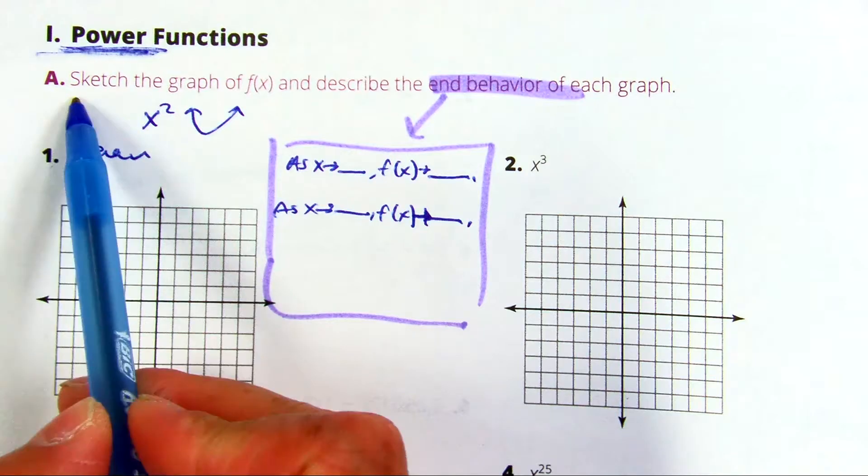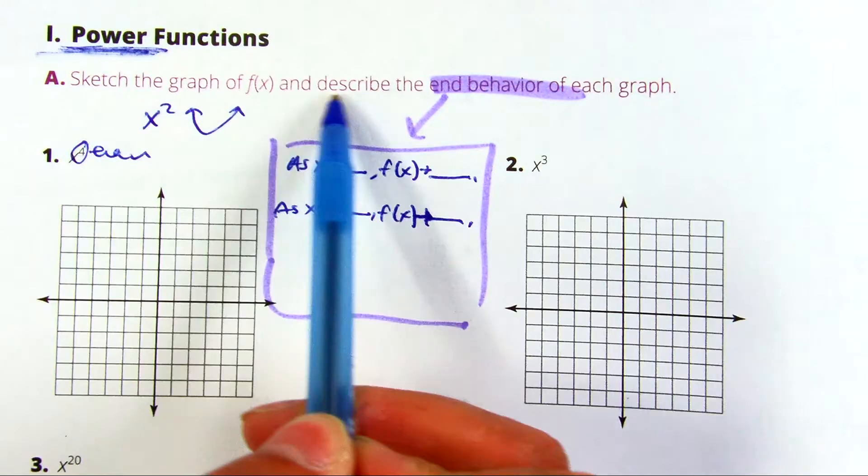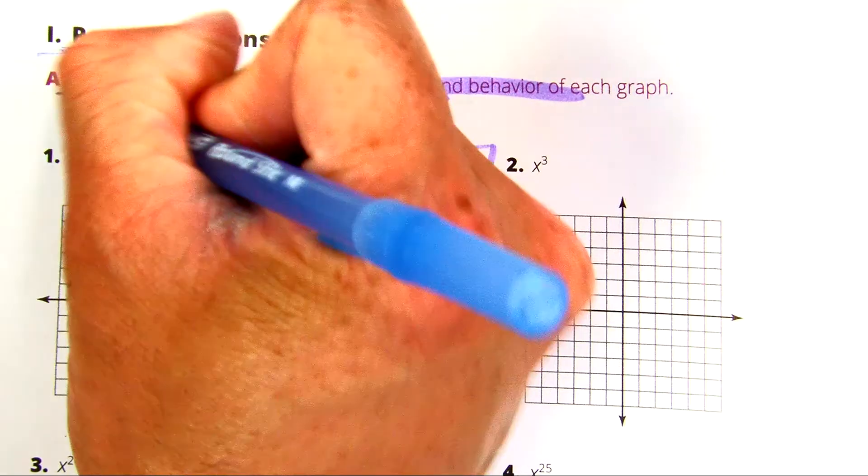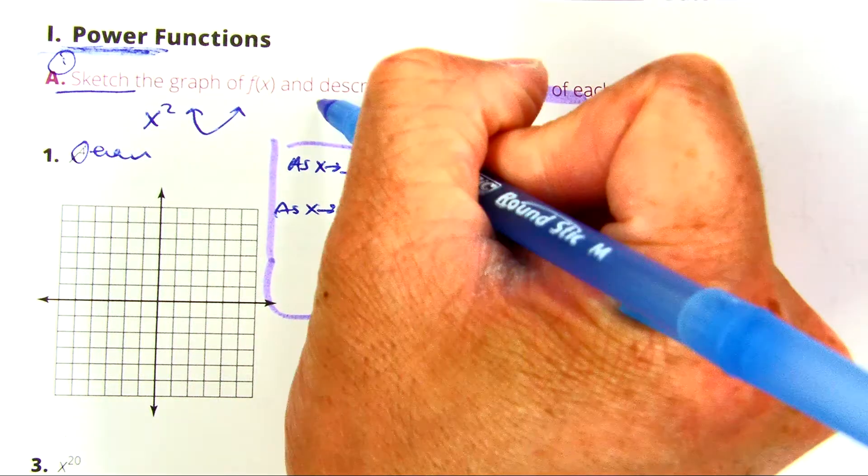Question A1 tells you to sketch the graph of the function and describe the end behavior. So, sketch is a verb, that's the first thing, and describe is the second verb.